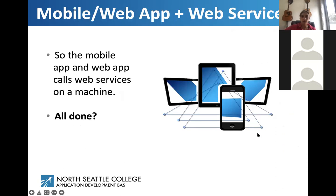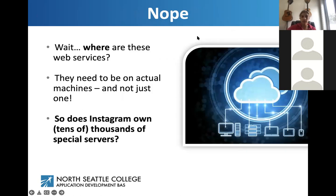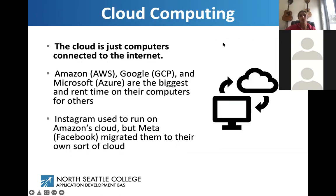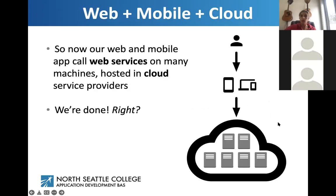Where are these web services located? They need to be on actual machines, and not just one. Does Instagram own tens of thousands of special servers? That's where cloud computing comes in. The cloud is just computers connected to the internet — the popular ones are Amazon AWS, Google GCP, and Microsoft Azure. They rent time on their computers for others to use. Instagram used to run on Amazon's cloud, but Meta/Facebook migrated them to their own sort of cloud.